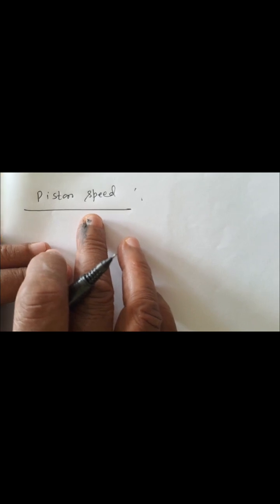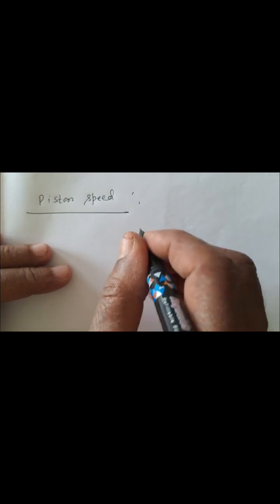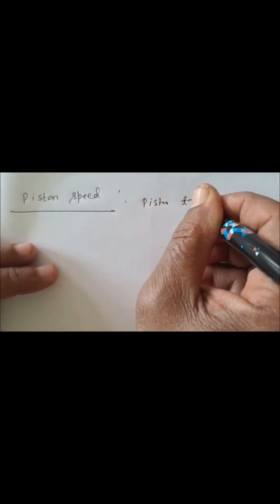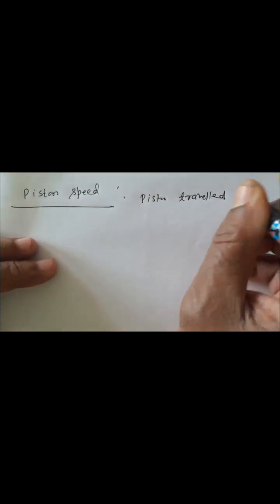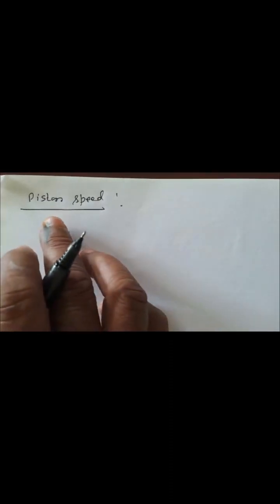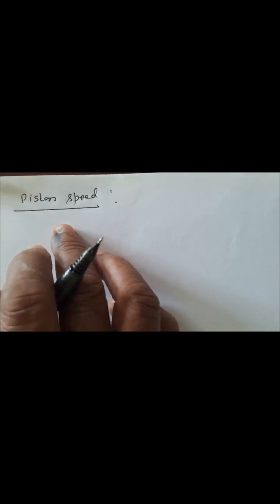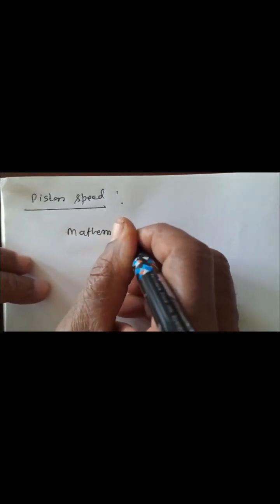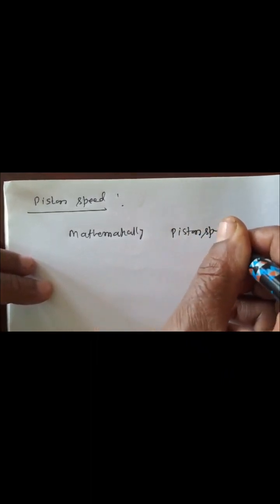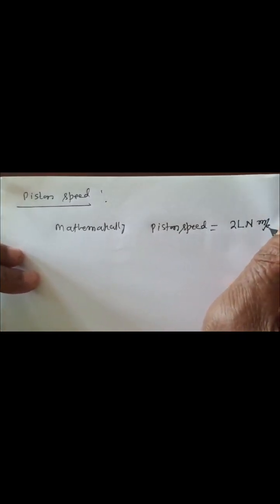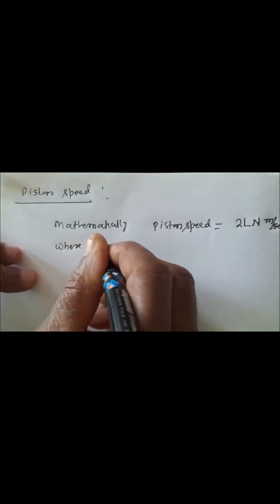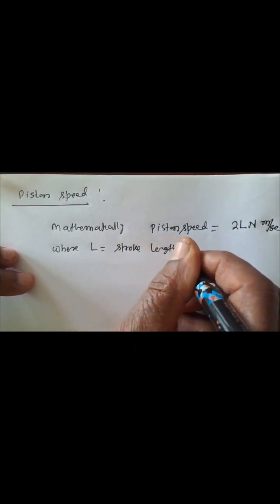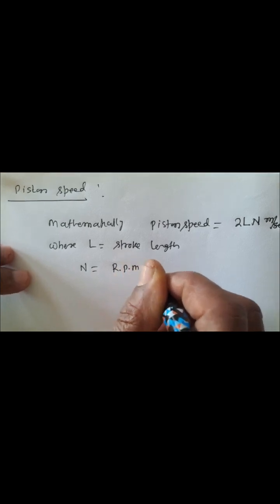What is piston speed? Piston speed is the distance travelled by the piston in unit time. Generally, time is taken as one minute. Hence, distance travelled by the piston in one minute is known as piston speed. Mathematically, piston speed is equal to 2LN meters per second, where L is equal to stroke length and N is equal to RPM of the engine.